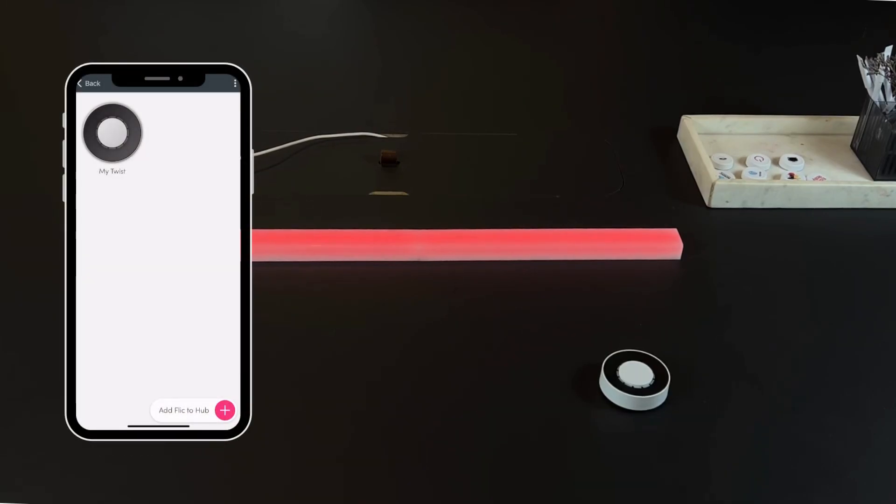Before we begin, ensure that your Flick Twist is connected to a Flick Hub. If you're not familiar with this process, refer to our tutorial on how to set up a Hub with a Twist.